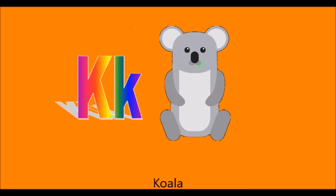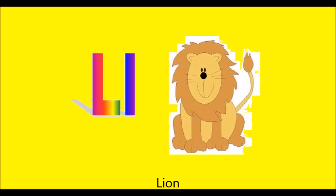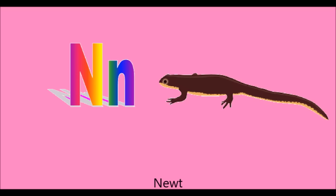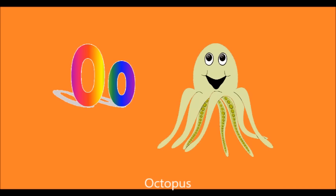K. K is for koala. L. L is for lion. M. M is for mouse. N. N is for newt. O. O is for octopus.